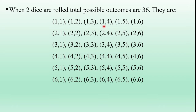Continuing the sample space: (3,1), (3,2), (3,3), (3,4), (3,5), (3,6), (4,1), (4,2), (4,3), (4,4), (4,5), (4,6), (5,1), (5,2), (5,3), (5,4), (5,5), (5,6), (6,1), (6,2), (6,3), (6,4), (6,5), (6,6). So these are the outcomes when throwing two dice — totally there are 36 possible outcomes.